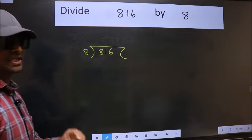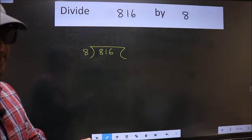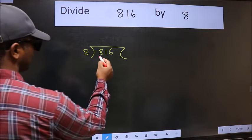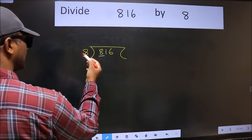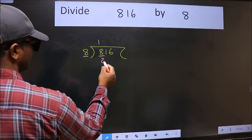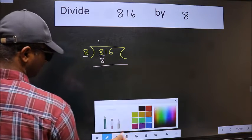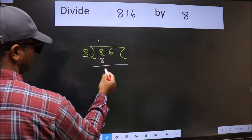This is your step 1. Next. Here we have 8 and here 8. When do we get 8 in 8 table? 8 once 8. Now we should subtract. We get 0.